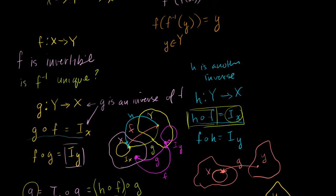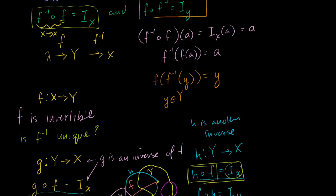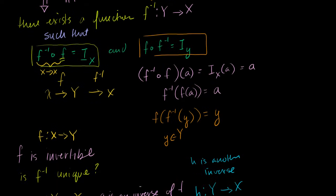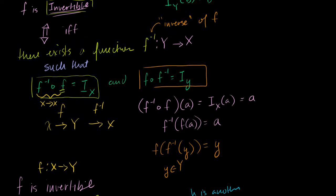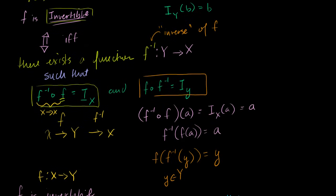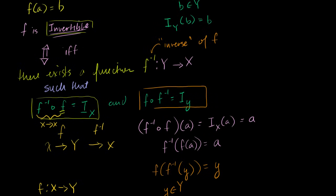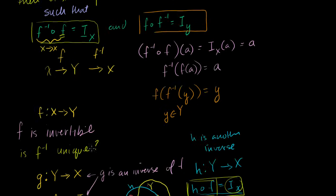So any function has a unique inverse — you can't have two different inverses, and if you assume you do, you'll find they're always equal to each other. So we now know what an inverse is, and we know that if a function has an inverse, that inverse is unique.